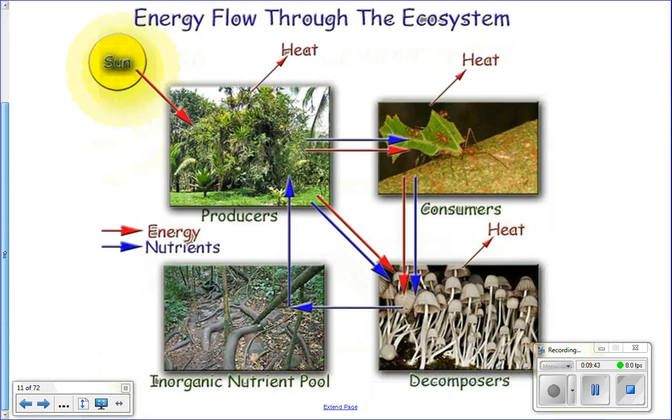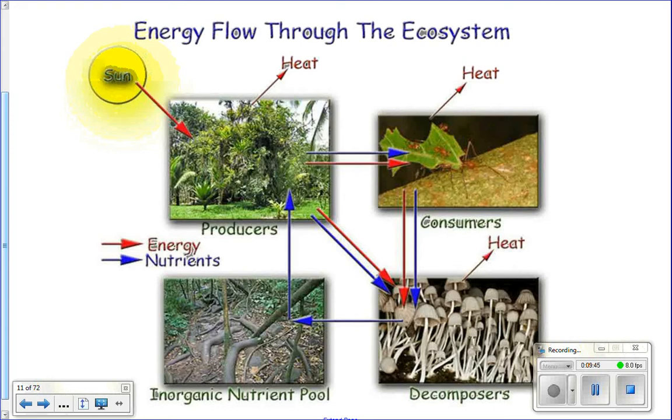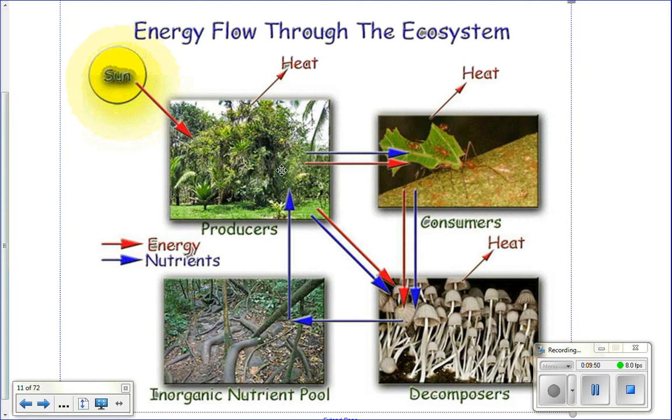You have the sun giving energy to all of your primary producers. And so the primary producers have matter and energy. They get eaten by consumers, and those consumers pass it up the food chain. So you have primary, secondary, tertiary consumers pass it up the food chain. And so the matter and energy goes through those levels of the food chain.